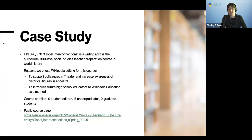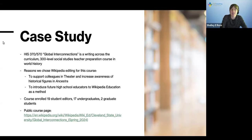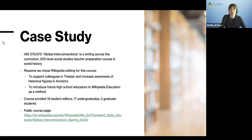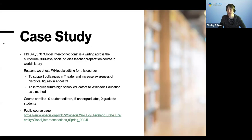Our course this semester was History 370, cross-listed as a graduate course number 570 at Cleveland State, called Global Interconnections. It's a writing across the curriculum course as well as a methods course for future social studies teachers. It's a pretty advanced course — we're looking at historiography, which is the study of how historians do history.